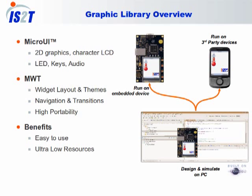IS2T HMI solutions provide developers with graphic libraries and dedicated tools to design custom UI frameworks, widgets and UI screens. The graphic libraries are made of two libraries: Micro UI, or Micro User Interface, which deals with 2D graphics and IOs for user interface design; and MWT, or Micro Widget Toolkit, which offers higher level APIs to easily deal with widget design and rendering.